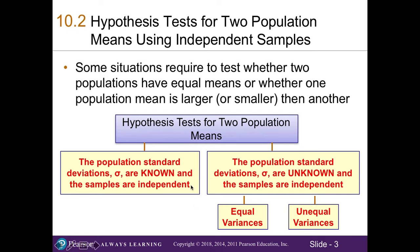There are two different situations of hypothesis testing. One is when we know the population standard deviation and our samples are independent, and when we don't know the population standard deviations and the sample sizes are also independent. Note that sigma is our population standard deviation symbol. When identifying the right type of hypothesis test, make sure you know whether we know the population standard deviation. When we don't, we also need to identify whether the variances are equal or unequal.